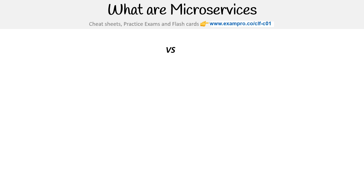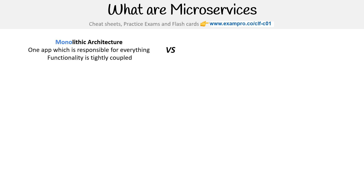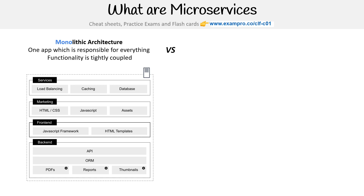Hey, this is Andrew Brown from ExamPro. We are taking a look at the concept of microservices. And to understand microservices, we first need to understand monoliths or monolithic architecture. The idea here is that we have one app which is responsible for everything, and the functionality is tightly coupled.